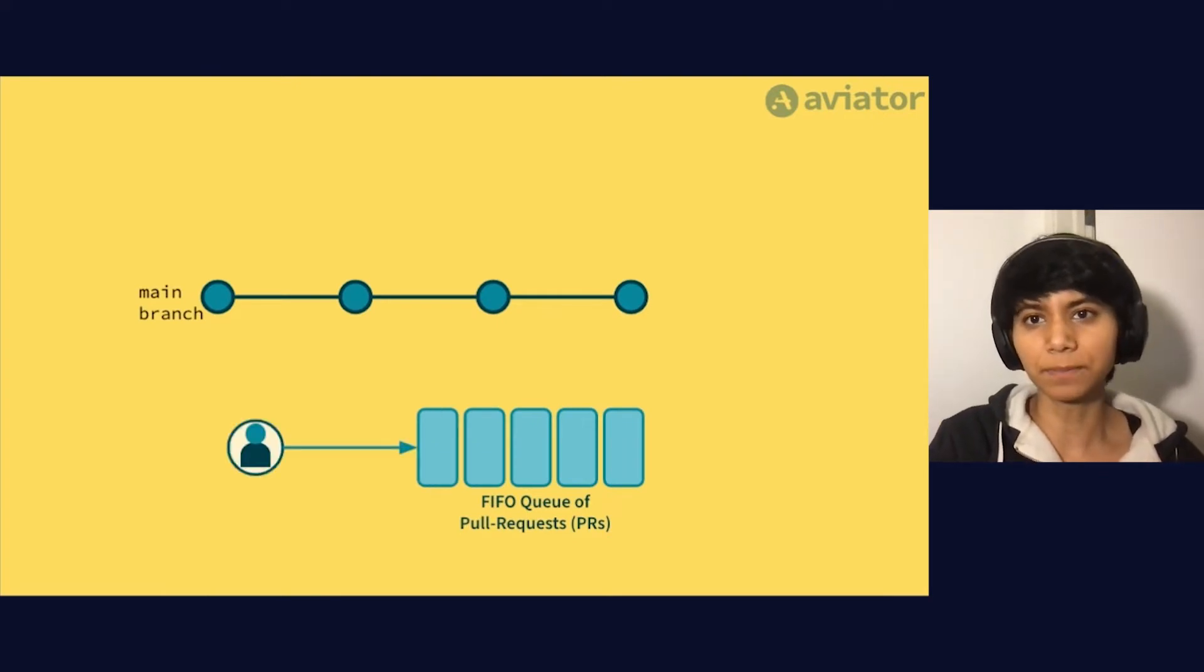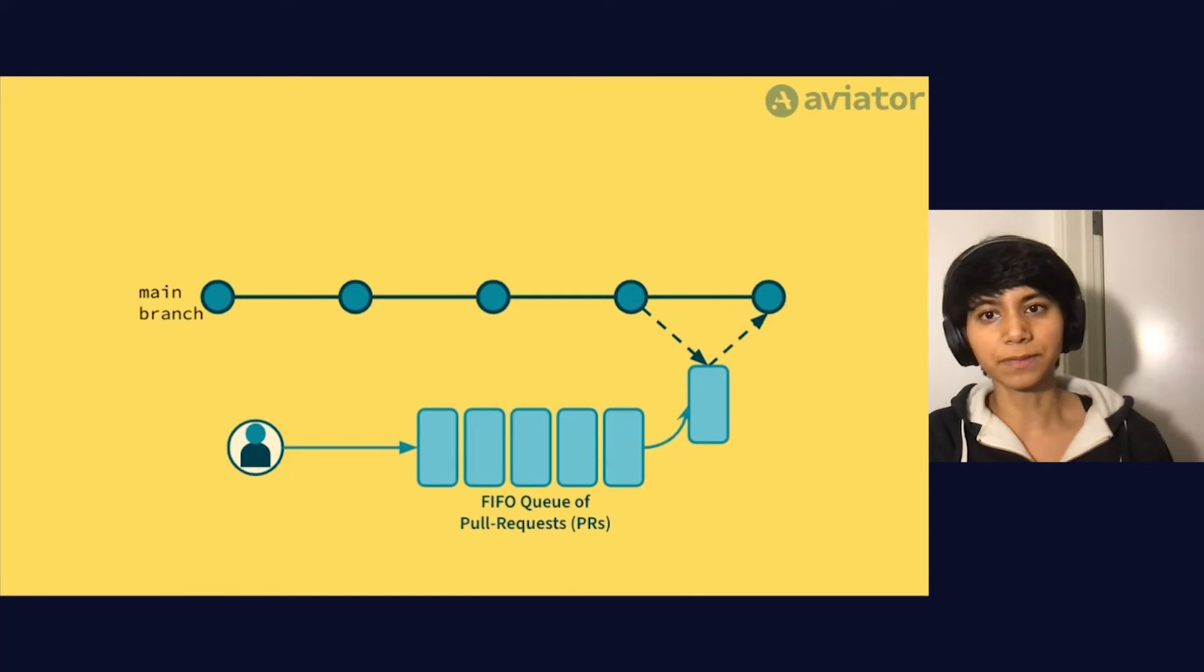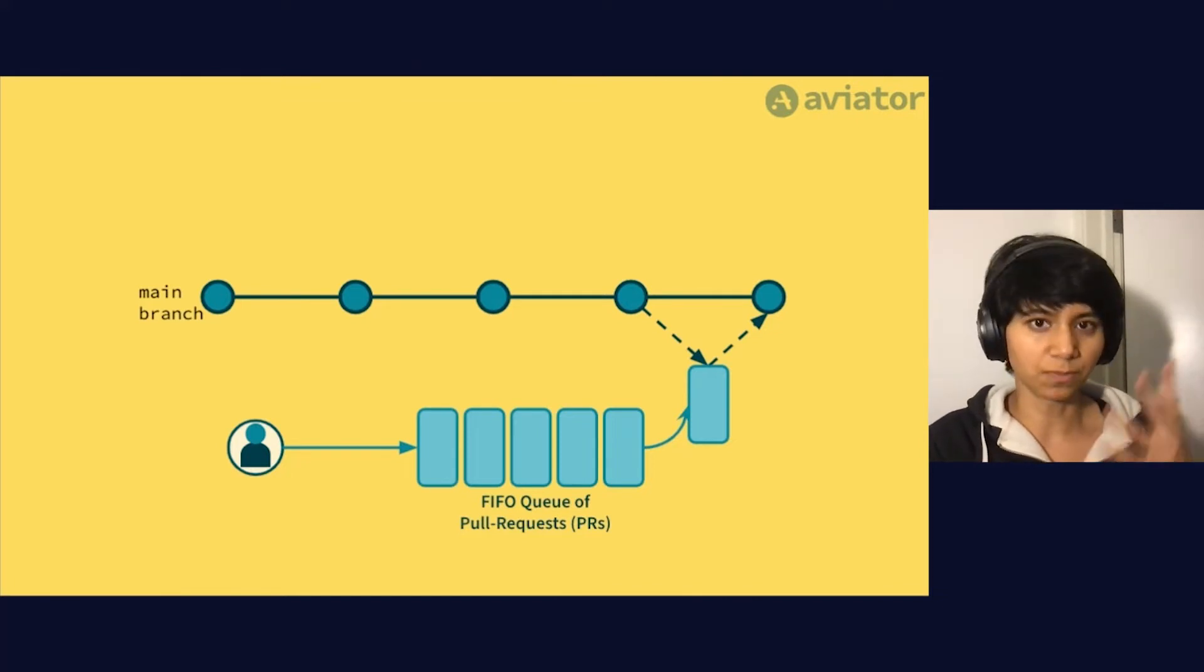This bot then updates each pull request with the latest changes to check that it doesn't break the main branch, merges it, updates the next PR and so on. If any of these fail or cause a build breakage, it doesn't actually merge that PR, just moves on to the next one.